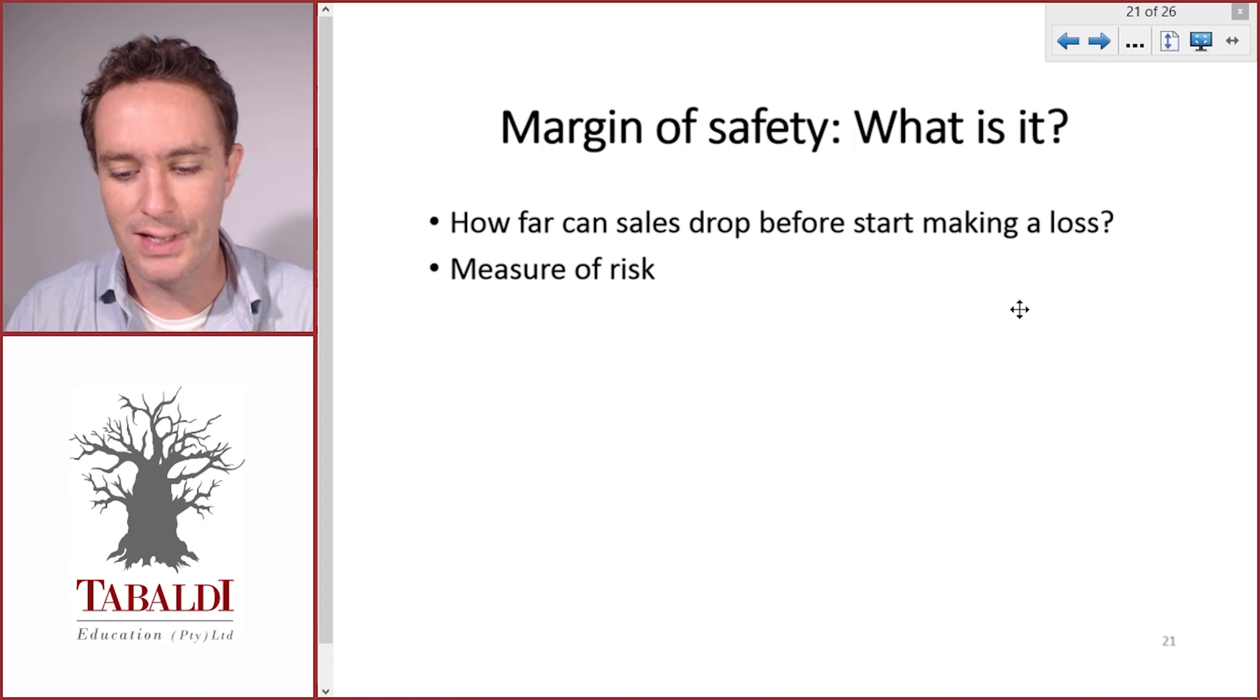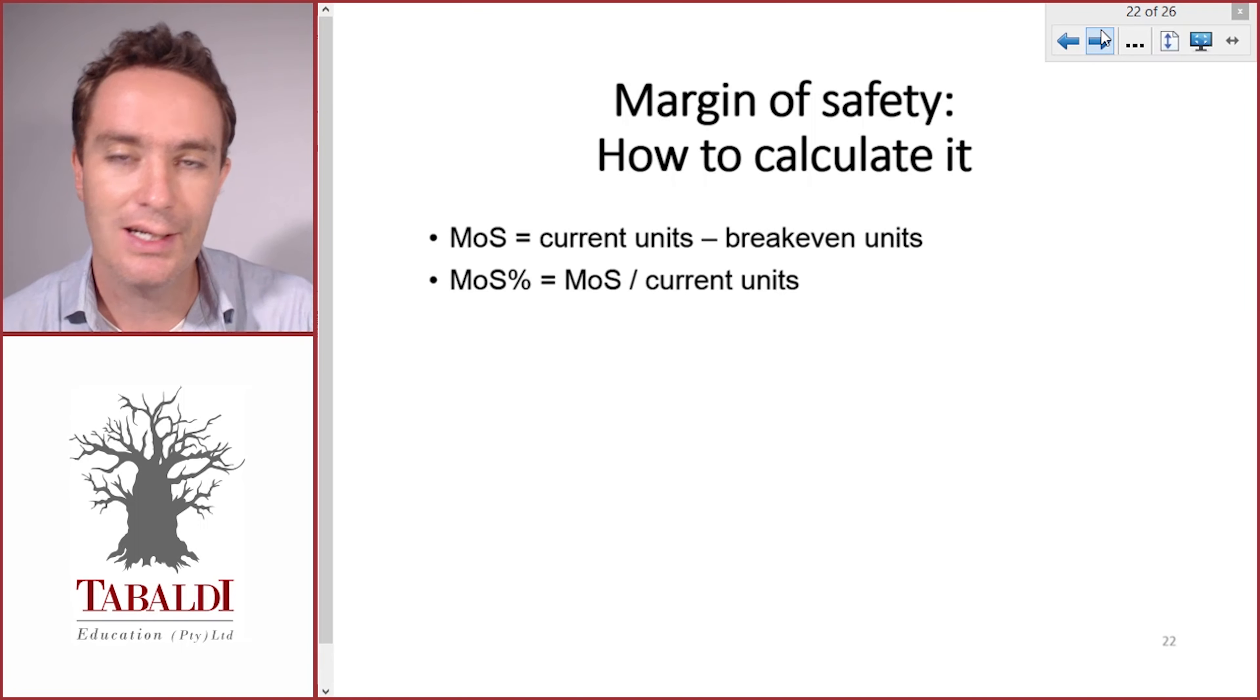If we currently sell X amount of bicycles and we calculate the margin of safety to be two bicycles, it means if we sell two bicycles less than we currently sell, we're going to start making a loss. That's a very risky position to be in. If our margin of safety is 100 bicycles, we know our sales could drop by 100 bicycles before we start making a loss. Let's look at an example of how to calculate the margin of safety.